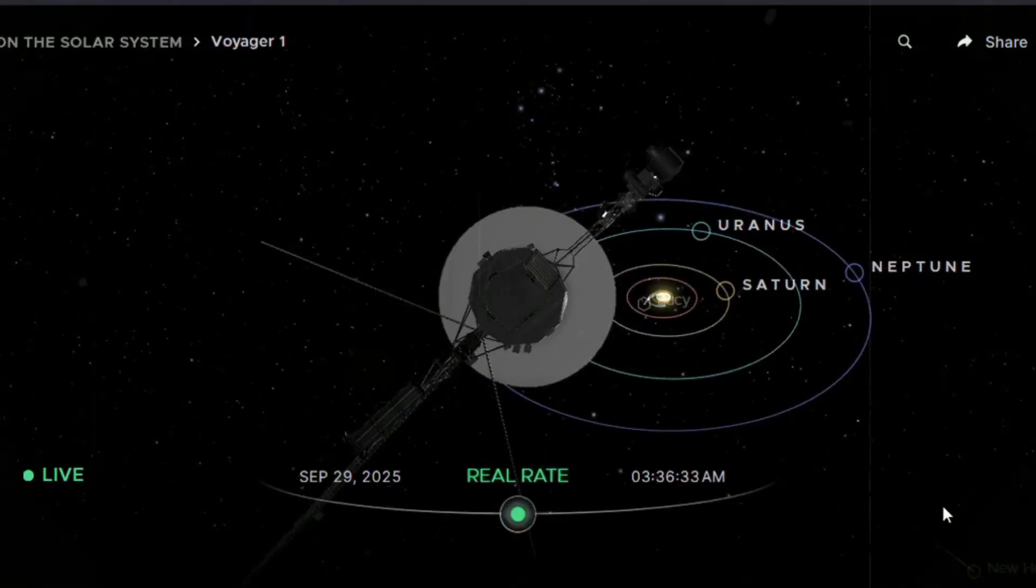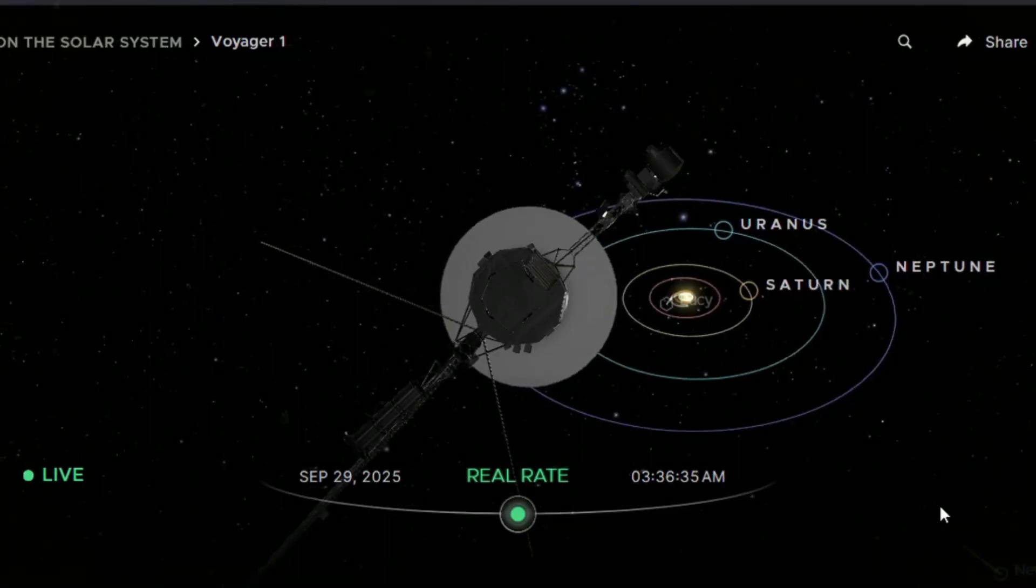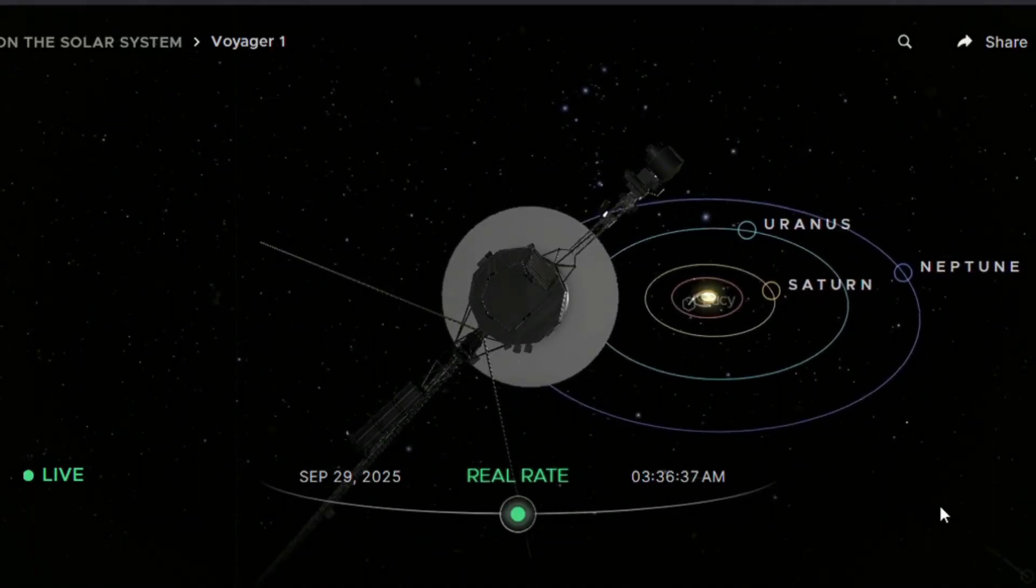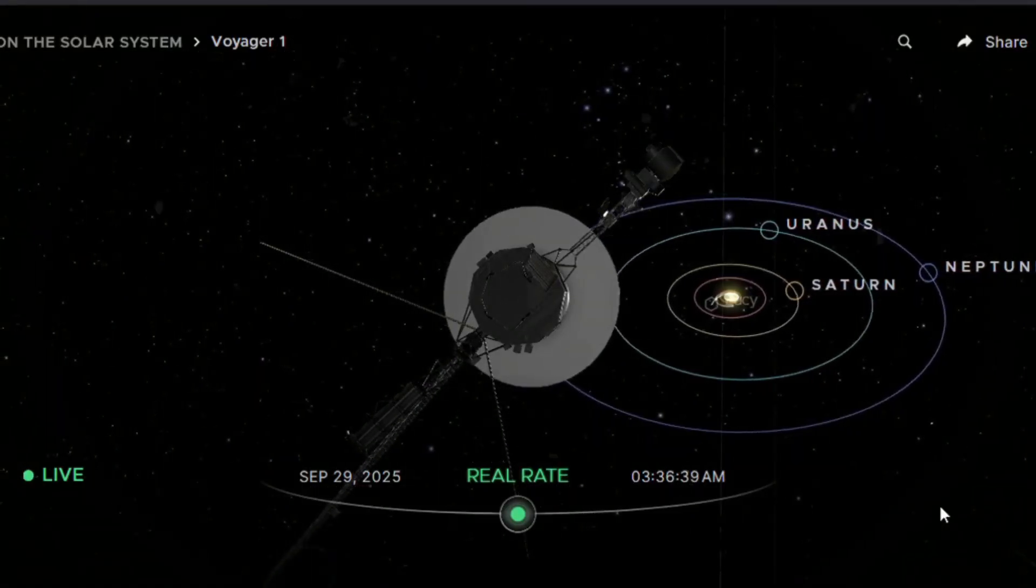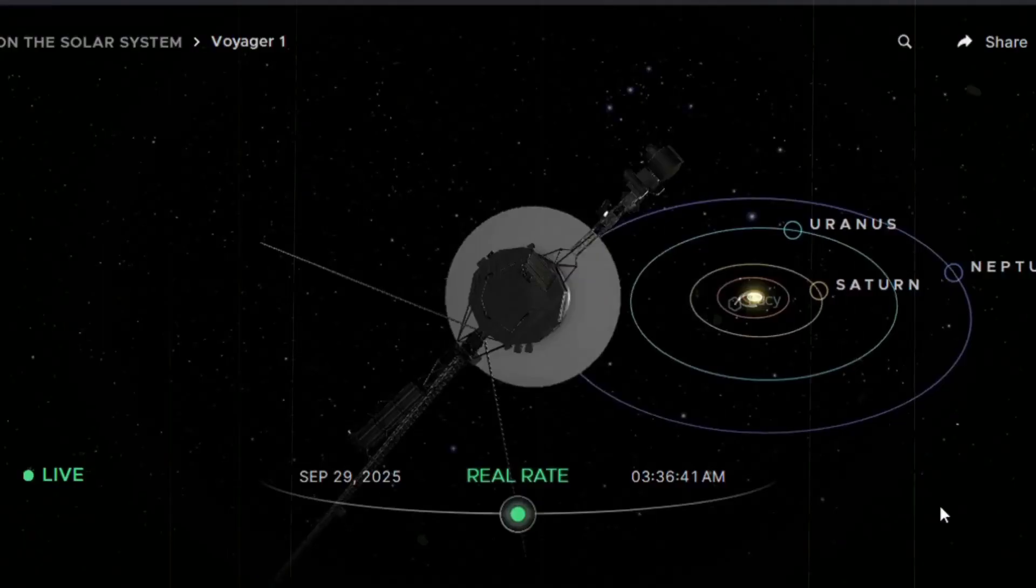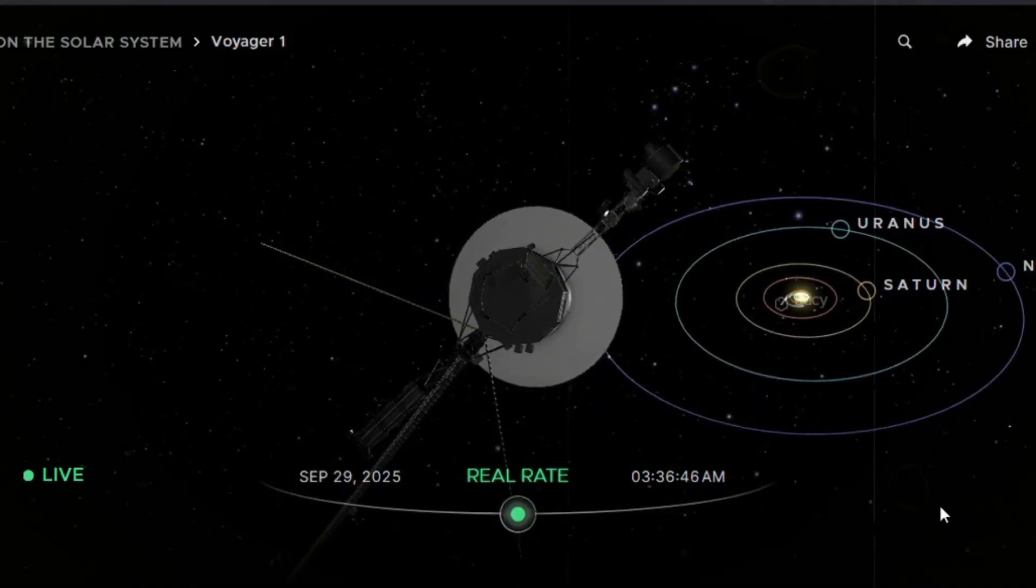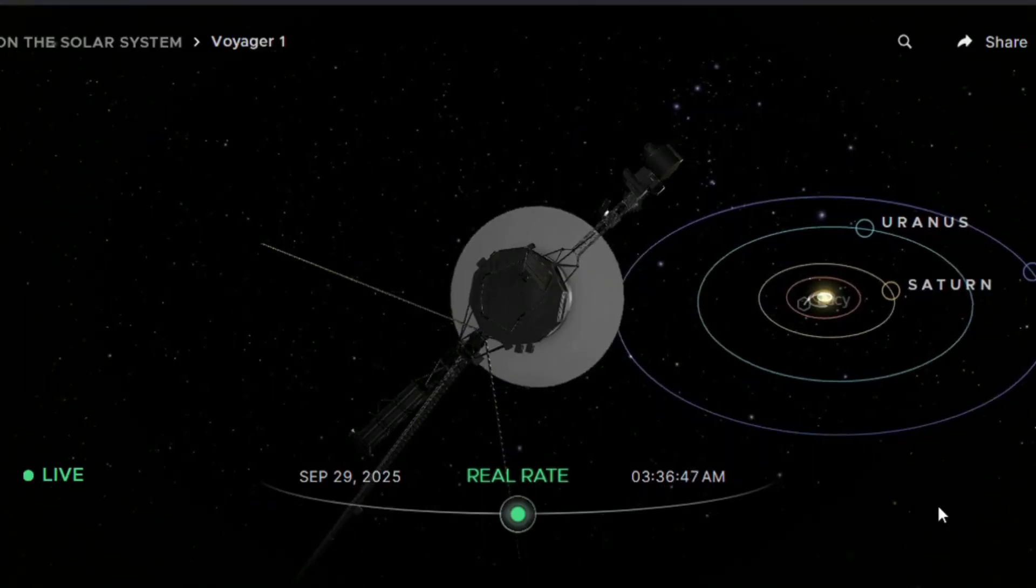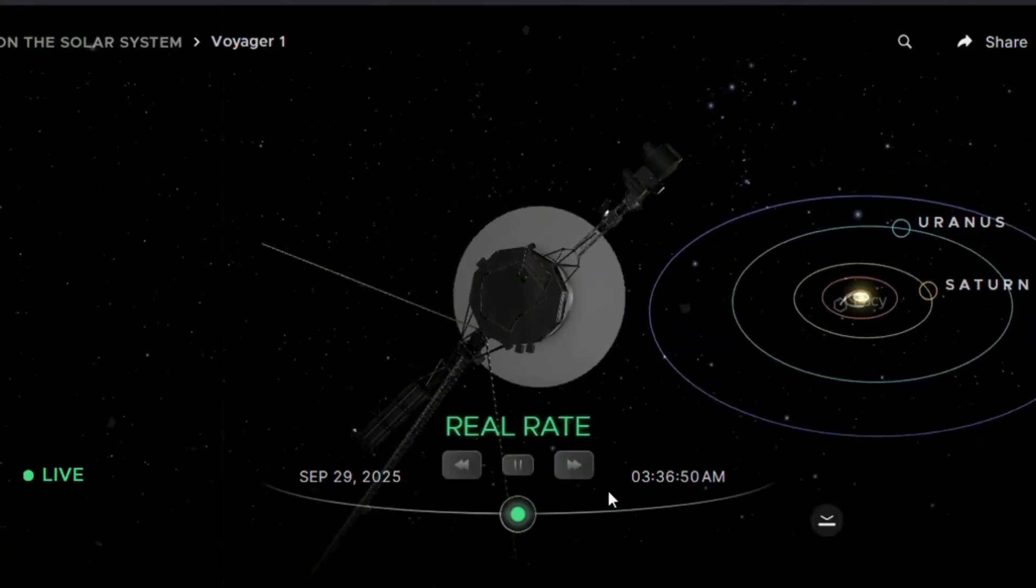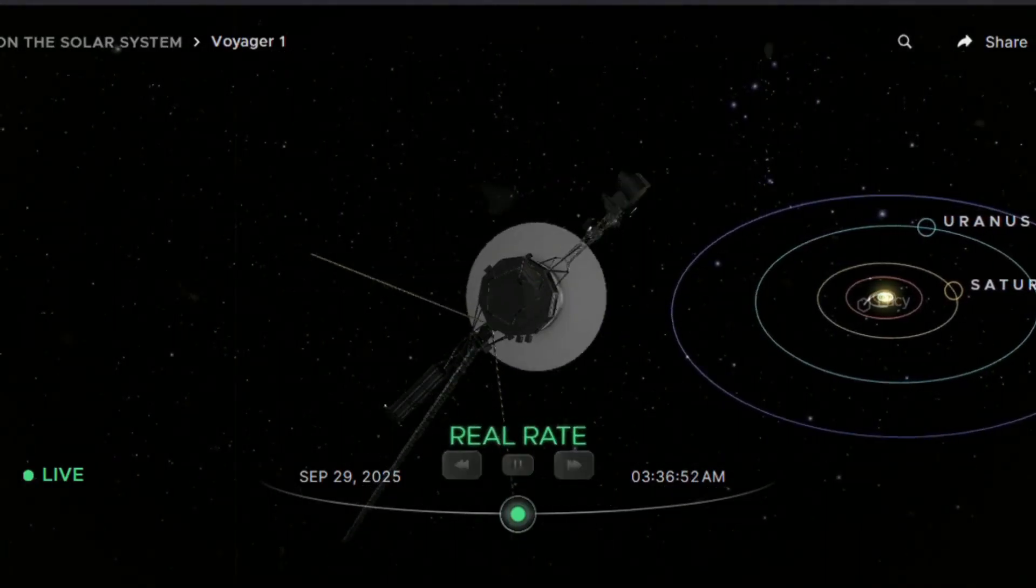When news broke that Voyager, humanity's farthest and most faithful scout, had stumbled upon evidence of a vast structure stretching across a million light-years, the reaction inside the scientific community was not measured curiosity, it was shock. A structure of that scale, so faint yet coherent, was supposed to be impossible.